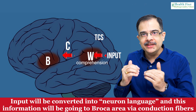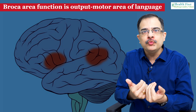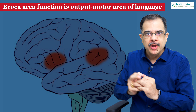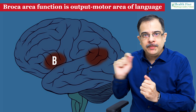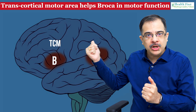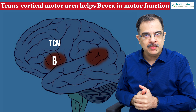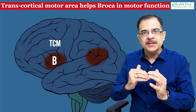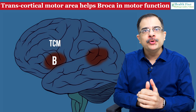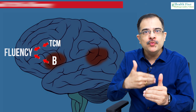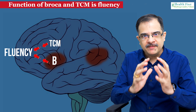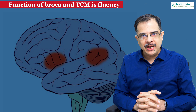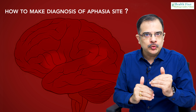That information then goes to the Broca's area through conduction fibers. The function of the Broca's area is output — the verbal output — or you can say it is the motor output, which you can call fluency. So these are the functions of these different areas. Now let's look at how to make a diagnosis of a particular area of language dysfunction.